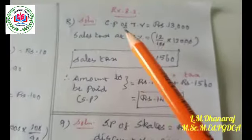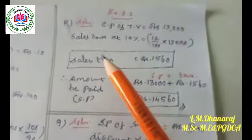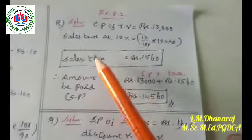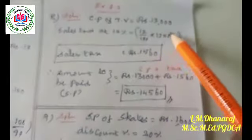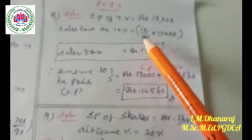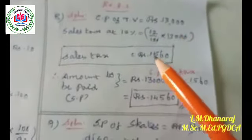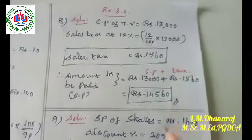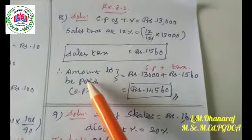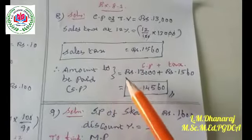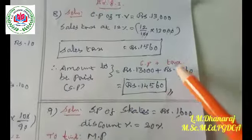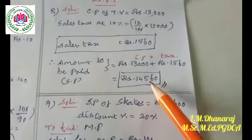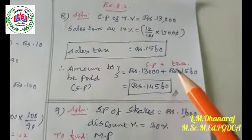Question number eight: the cost price of a TV is rupees 13,000 and the sales tax is 12%. The sales tax amount equals 12 divided by 100 into 13,000. Cancelling two zeros, 12 into 130 equals rupees 1,560 as sales tax. So the total amount to be paid by the customer, that is the selling price, equals cost price plus tax: 13,000 plus 1,560 equals rupees 14,560.